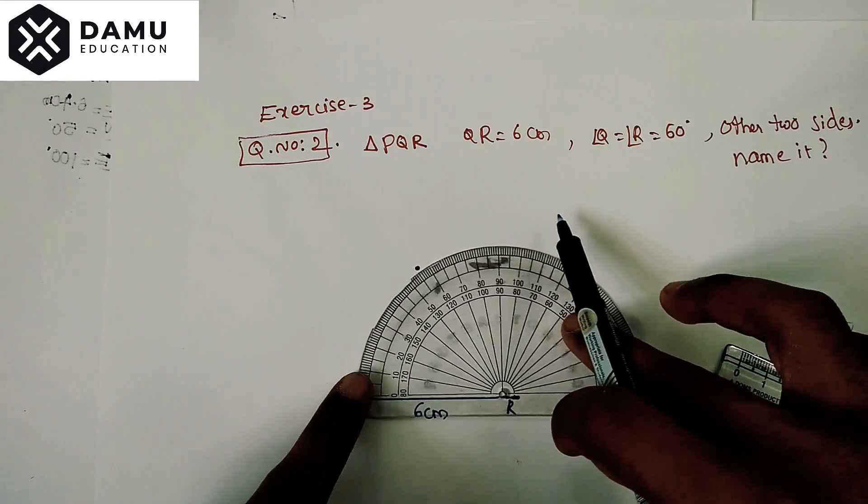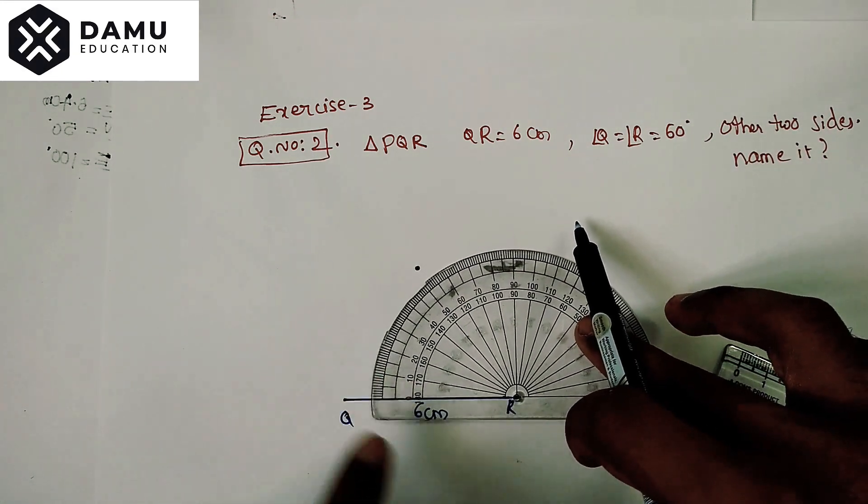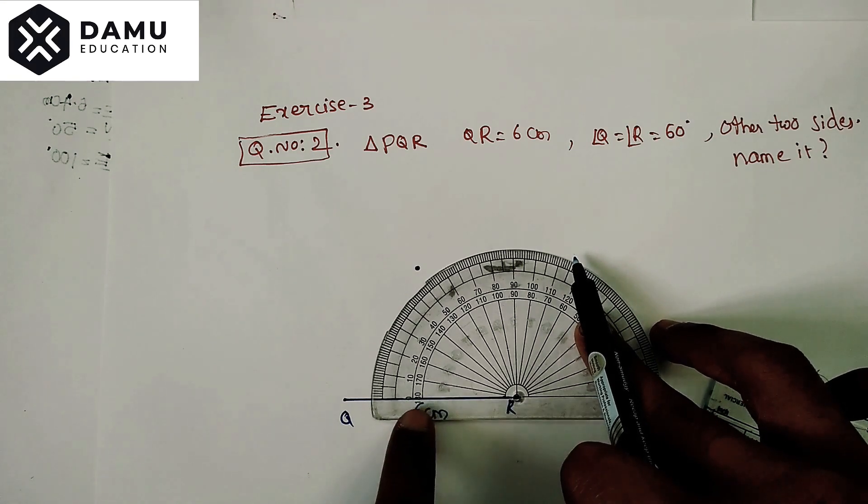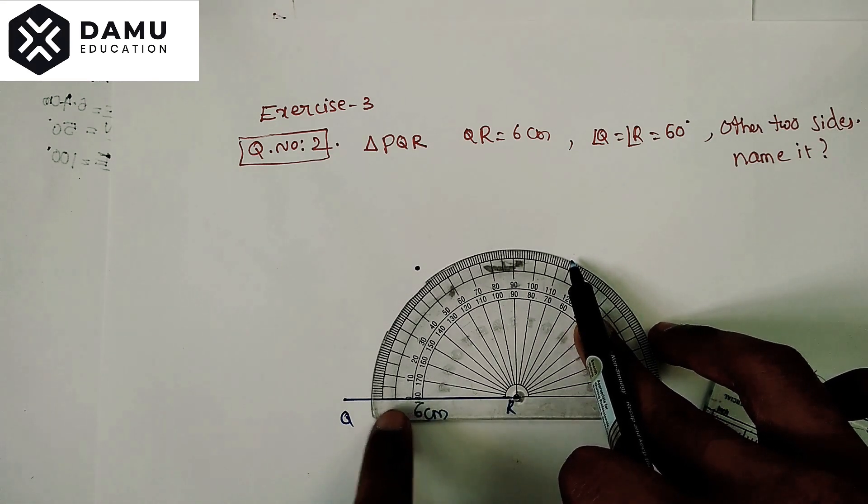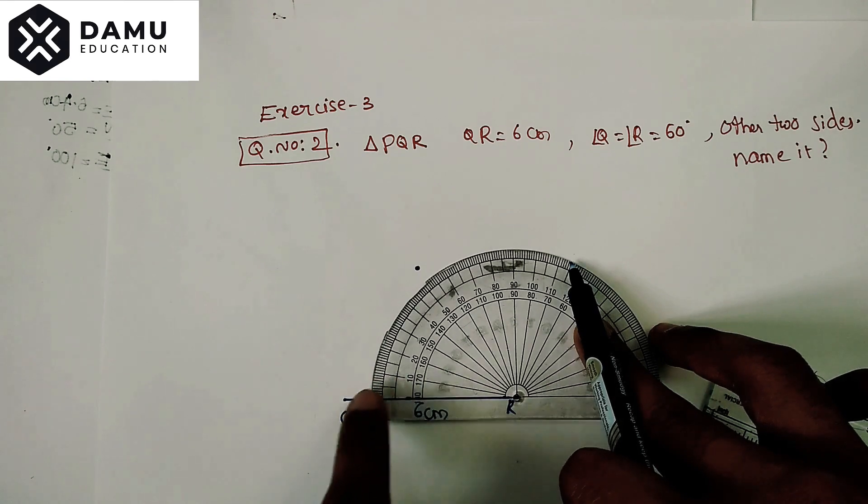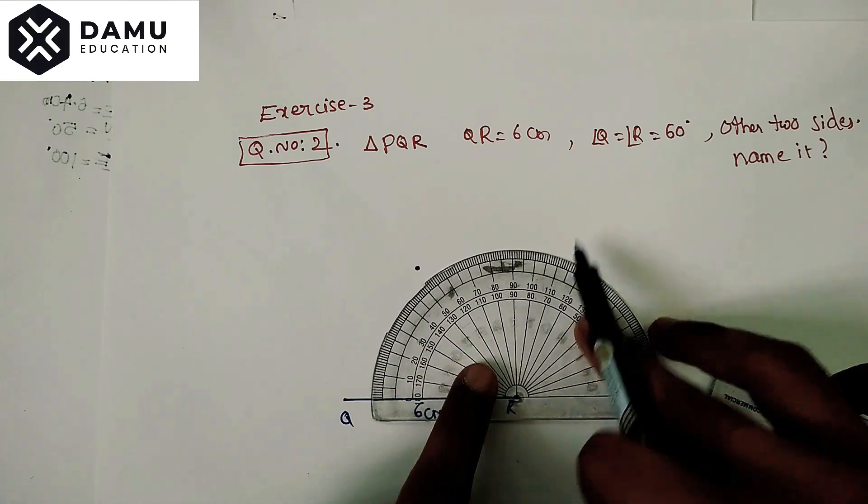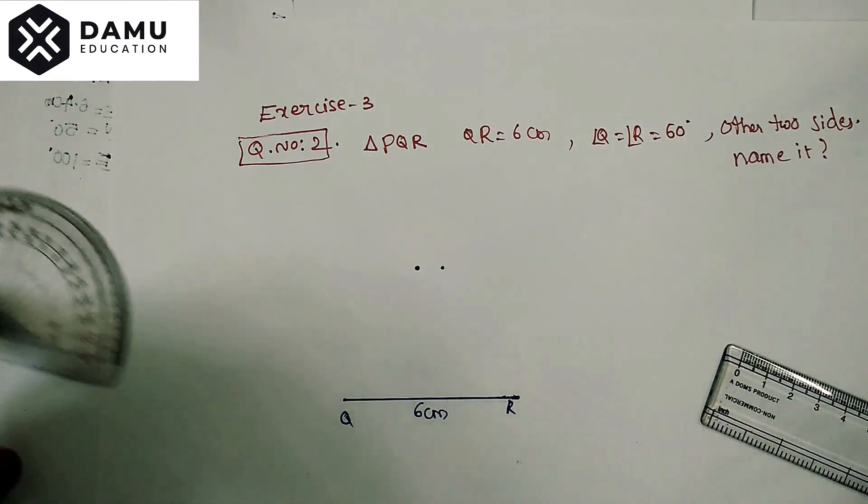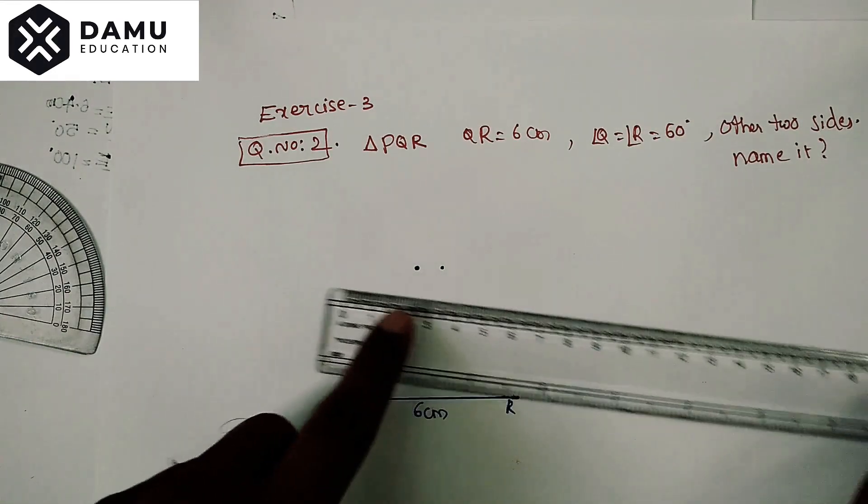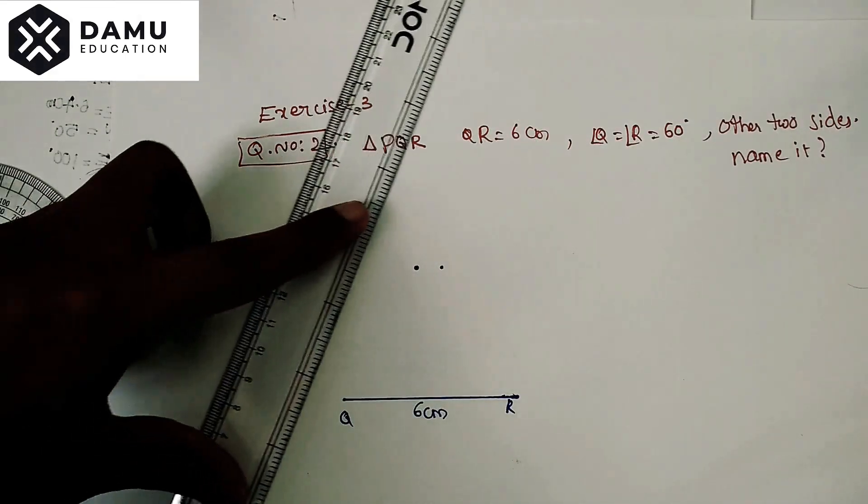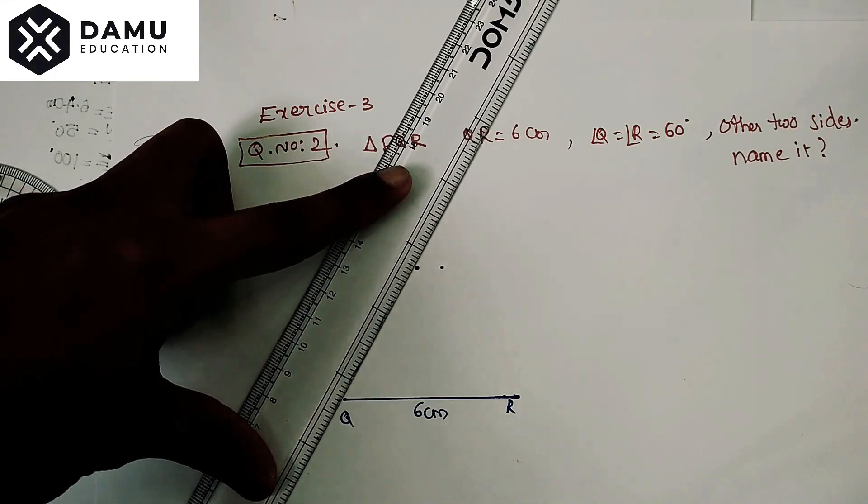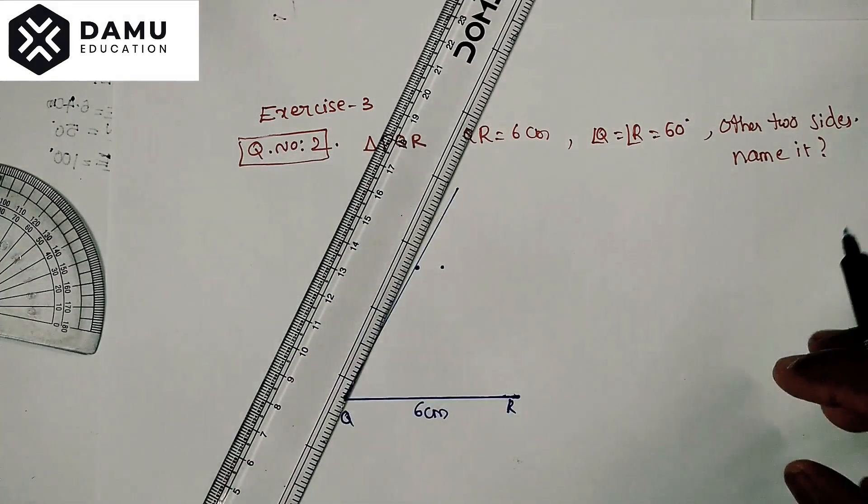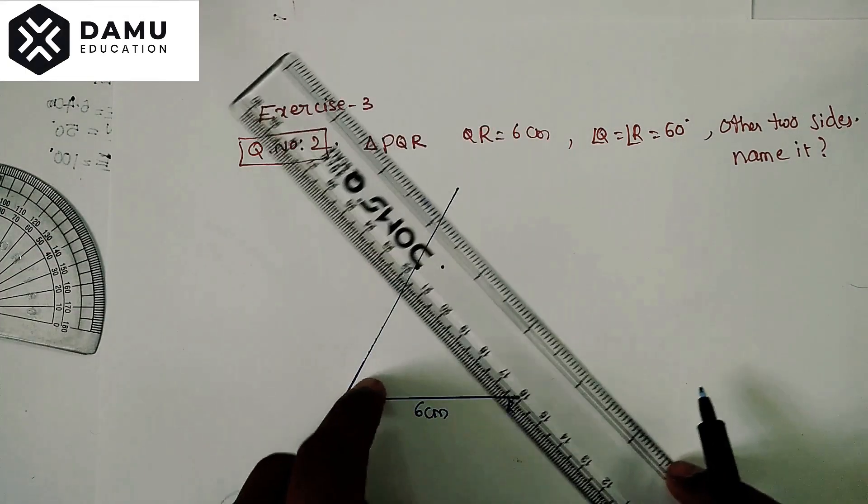Angle R also we have to keep like this. Now we have to coincide this protractor bottom line segment with this bottom upper 0 degrees. From this side it's coincident. So we are going to measure with 60. Draw two rays and here also we are going to draw that two rays.